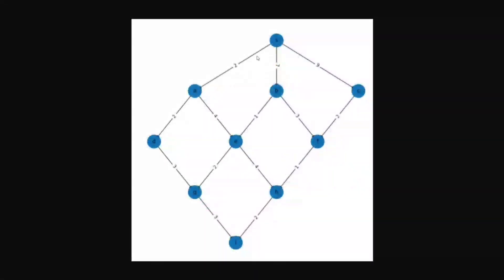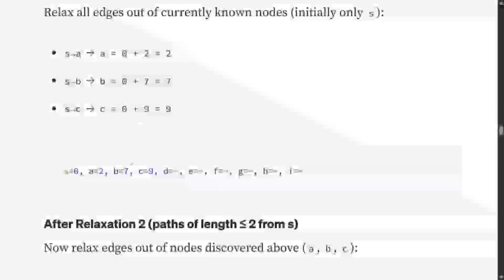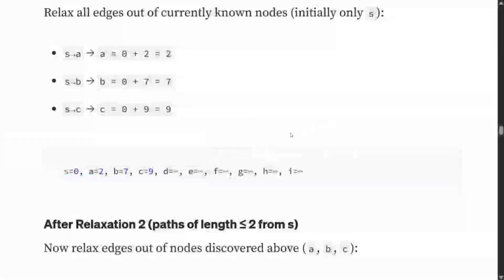If you look at this graph, what is the shortest path for one hop count, that is one edge? S is reachable to A, B, and C when we consider just one edge. Hence the weights for A, B, C would be getting updated to 2, 7, and 9. After relaxation round 1, S equals 0 because it was the ground node, A equals 2, B equals 7, C equals 9, and everything else is infinite for now.